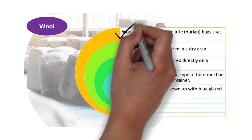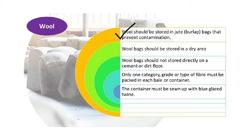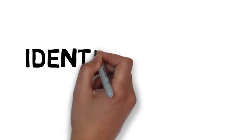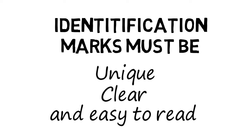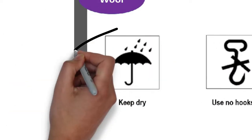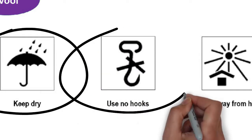Where wool is concerned, remember that wool should be stored in jute or burlap bags that prevent contamination. Wool bags should be stored in a dry area and should not be stored directly on a cement or dirt floor. As with mohair, only one category, grade, or type of fiber must be packed in each bale or container. The container must be sewn up with blue glazed twine, and the identification marks applied to each bale must be unique, clear, and easy to read.